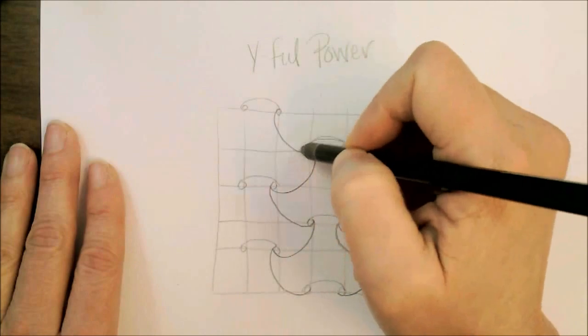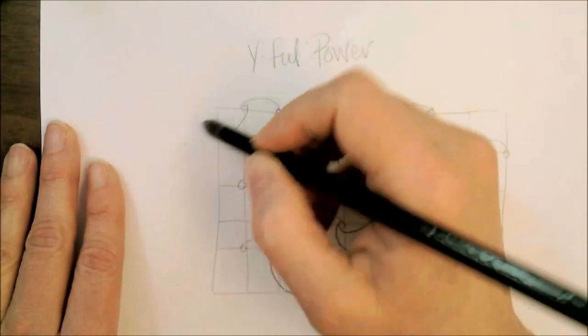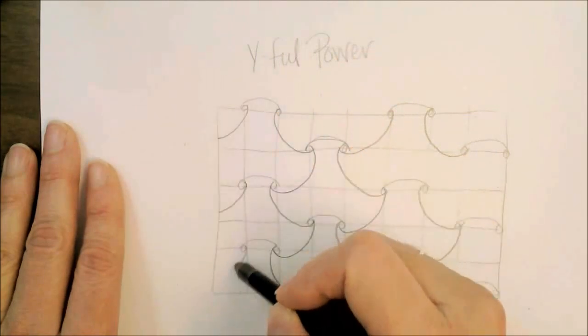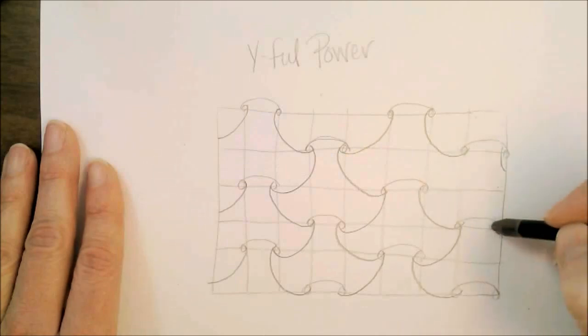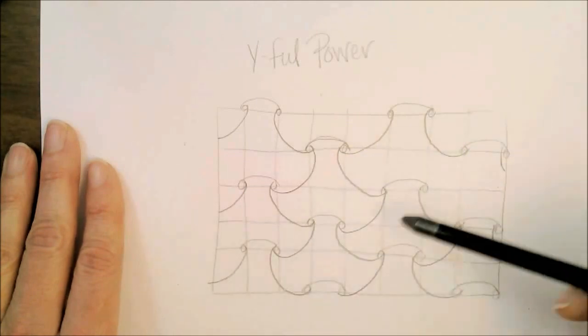You can already see the pattern forming here as we connect the dots with the arcs. This one's going off the sheet over here and it would connect down to that direction.